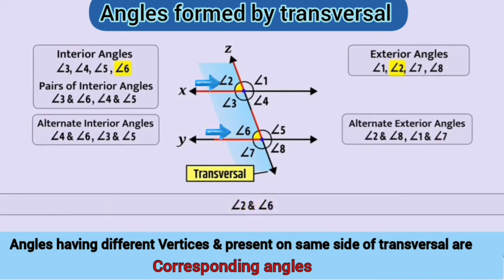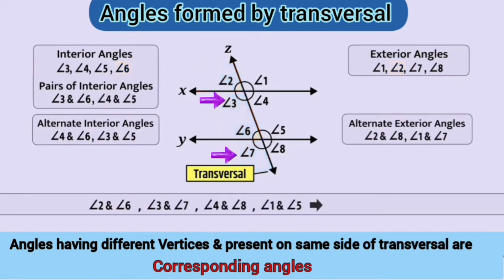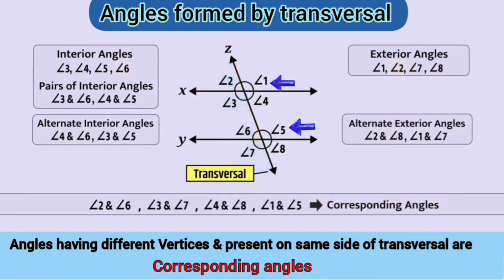The pairs of corresponding angles are: angle 2 and angle 6, angle 3 and angle 7, angle 4 and angle 8, and angle 1 and angle 5. We also know that two lines which never meet each other are called parallel lines.